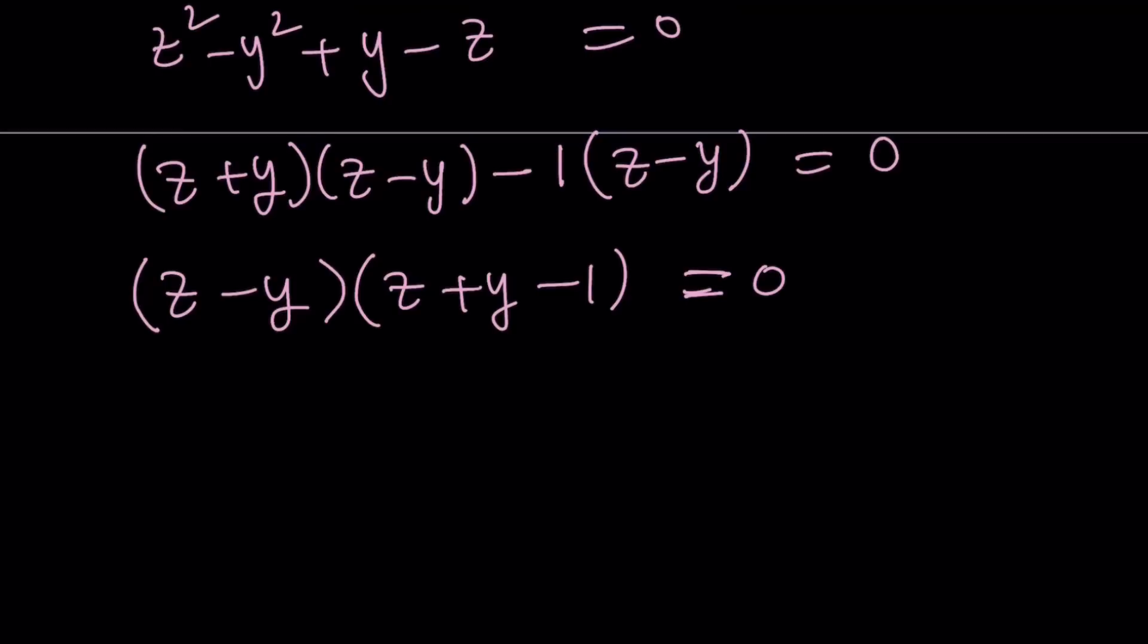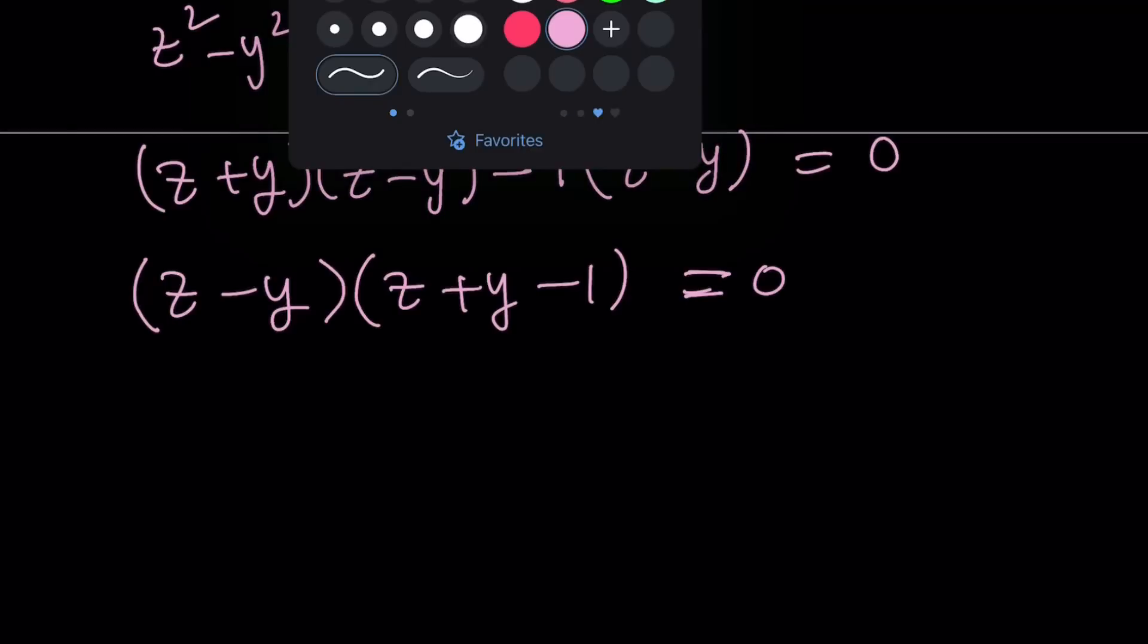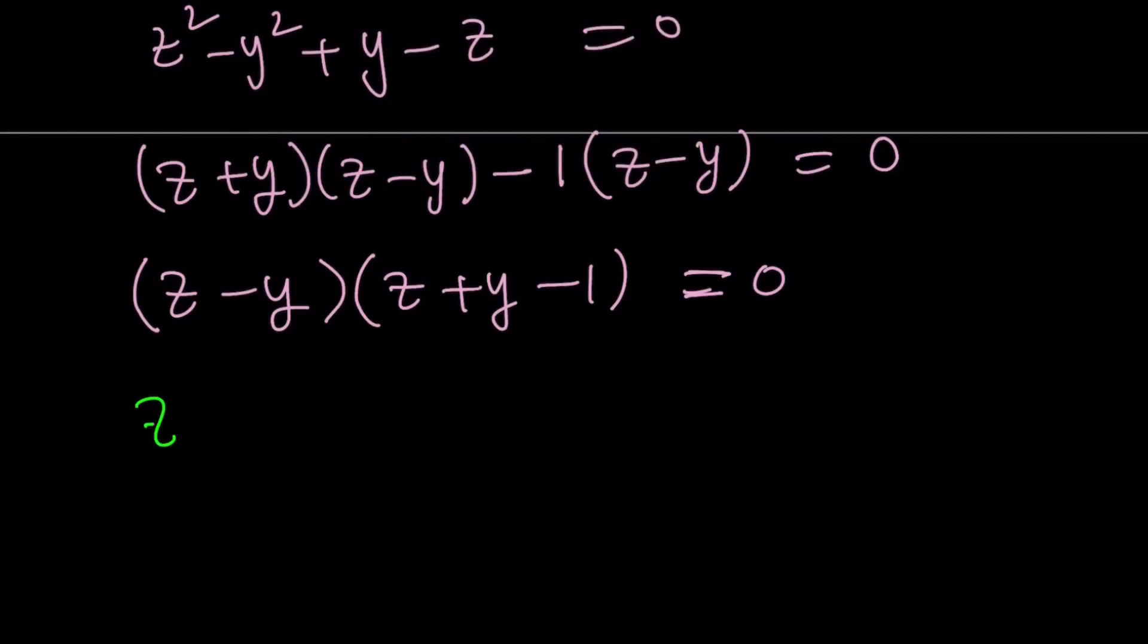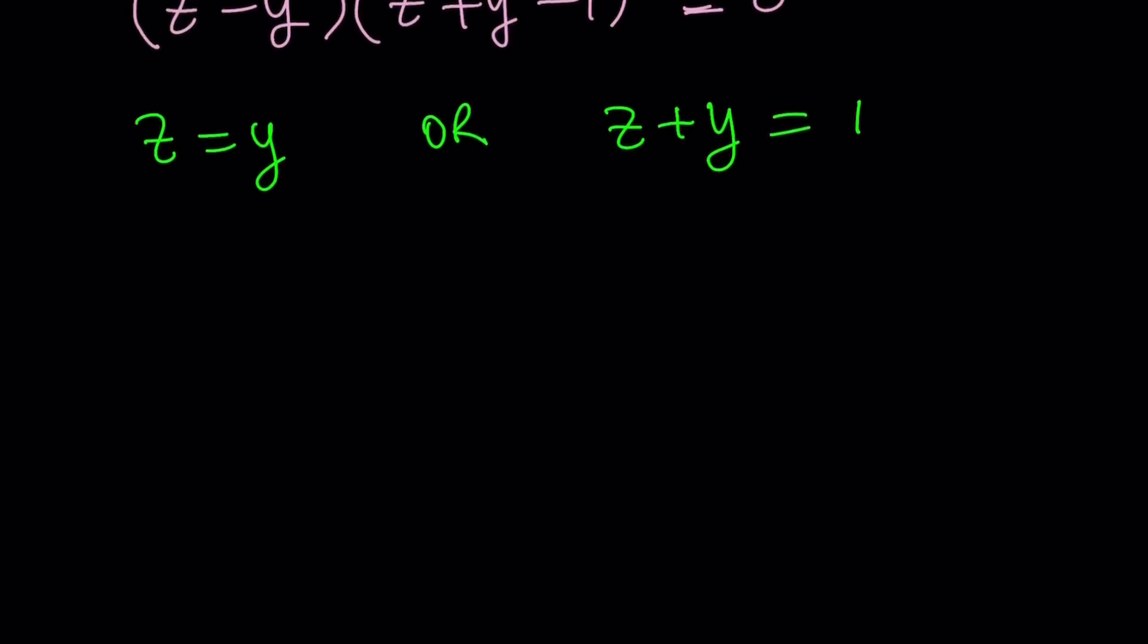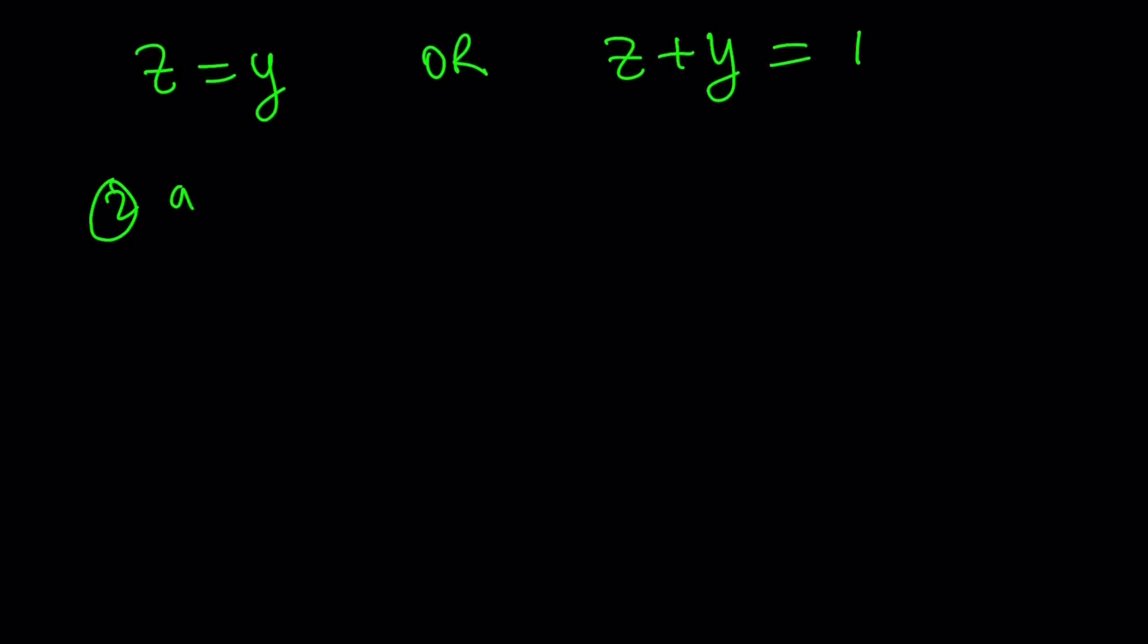Now this has two conclusions. This means either z equals y or z plus y equals one. Now which one? We're going to check both. But we only did it with equations one and two. Let's go ahead and use two and three now and see what happens.